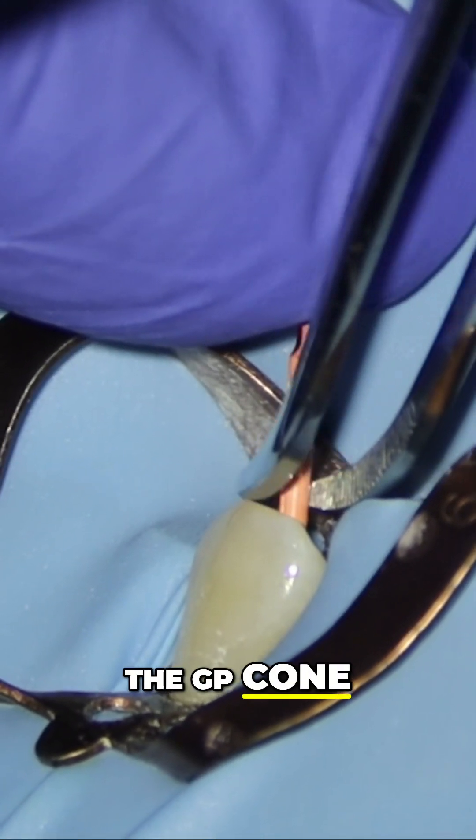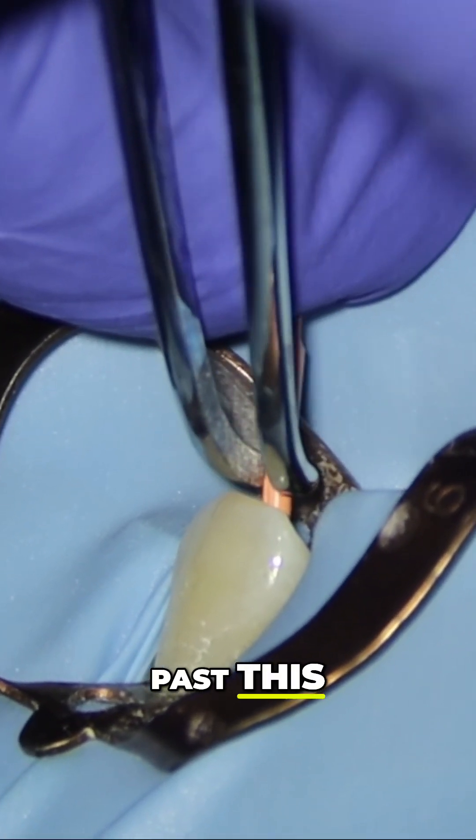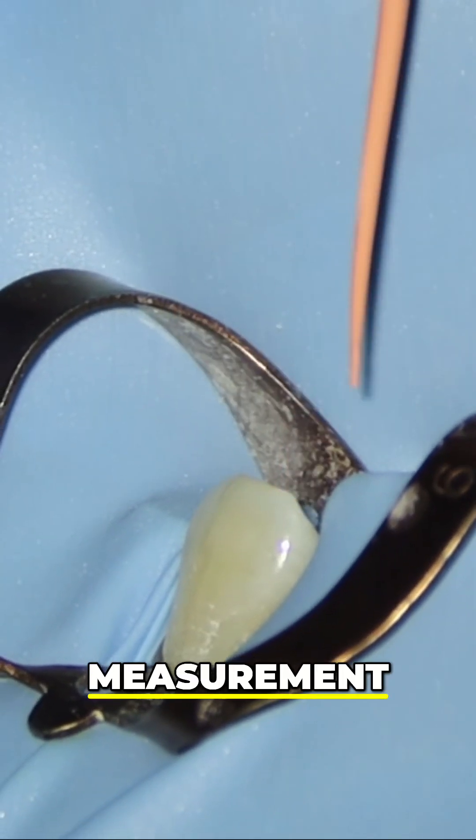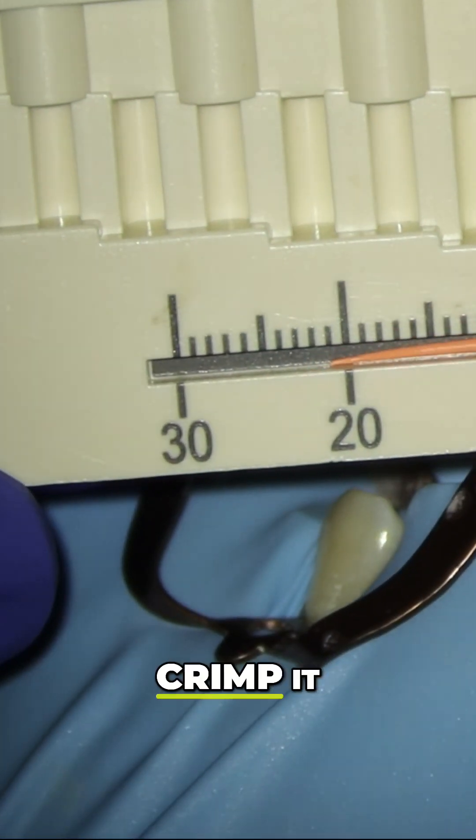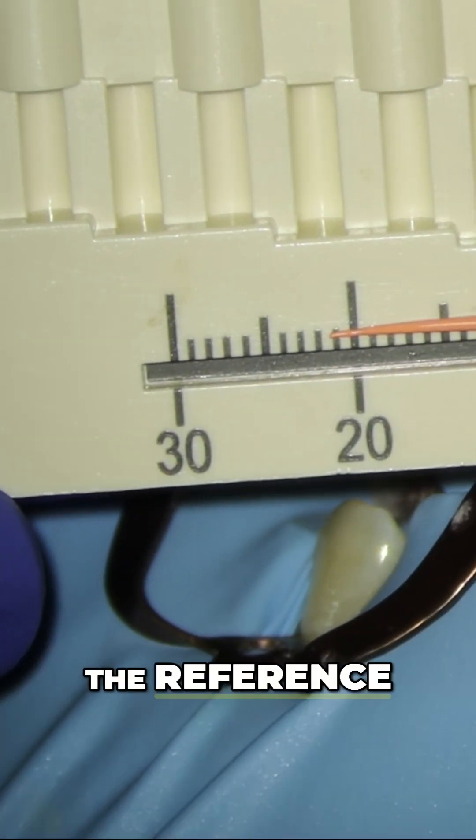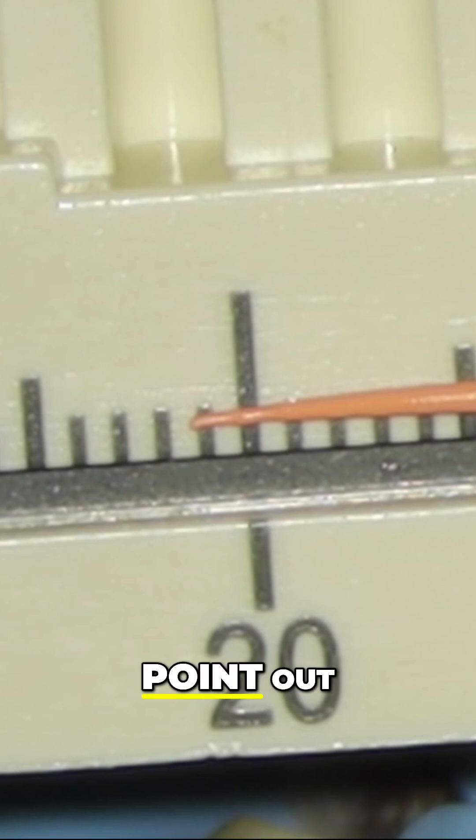So I'm going to get my tweezers. I'm going to crimp it at the reference point. And then as I pull this GP point out, I'm going to measure it.